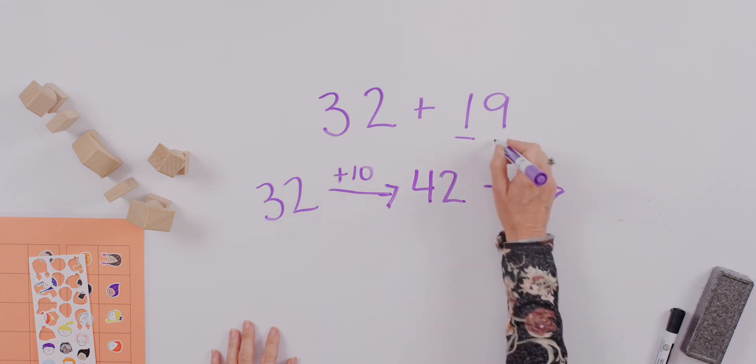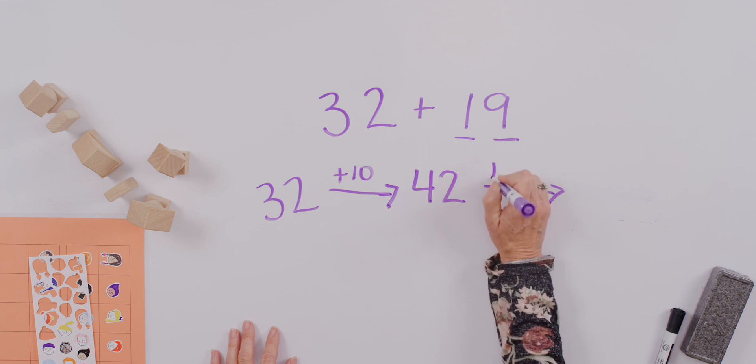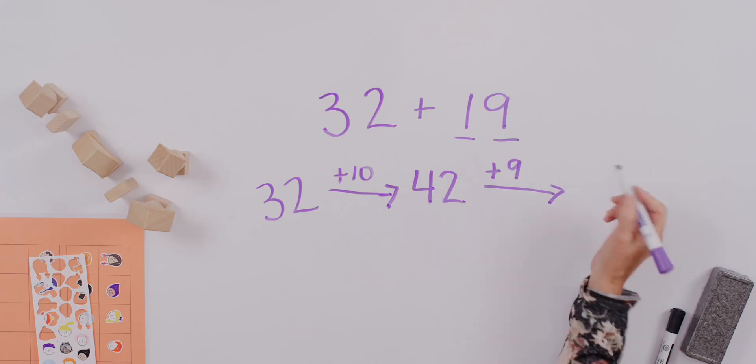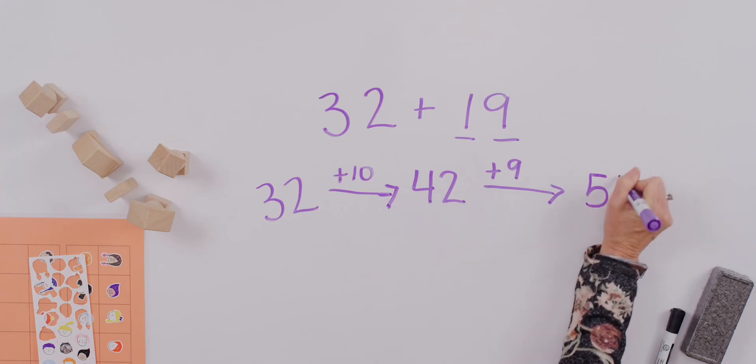Now, we have to add our nine ones. Nine is really close to ten, so if we said forty-two plus ten, we would get fifty-two. But we added one too many, so we take one away, and that gives us fifty-one.